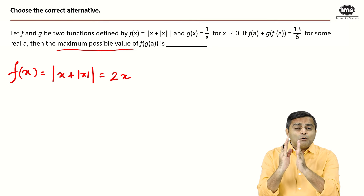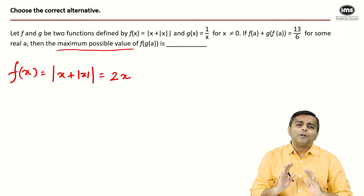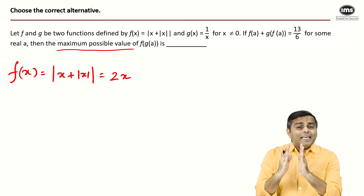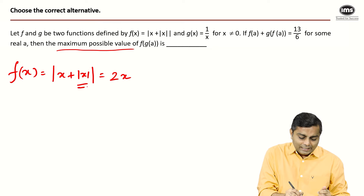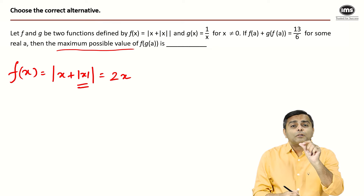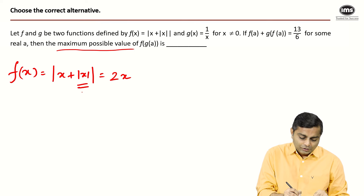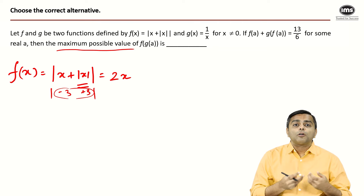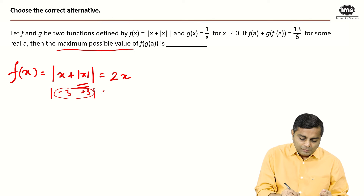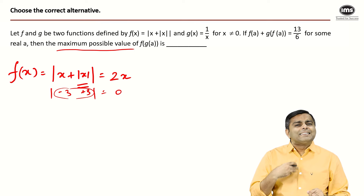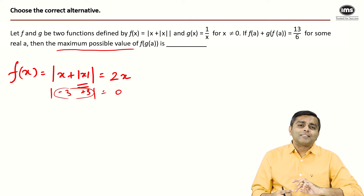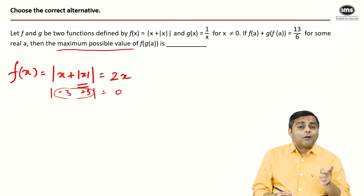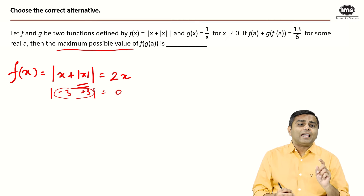Now consider the other possibility: if x is negative. Take an example — say x = −3. The innermost |x| converts −3 into +3. So we have |−3 + 3| = |0| = 0. So when x is negative, f(x) becomes 0.